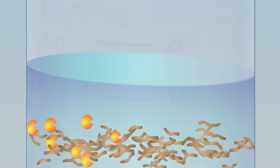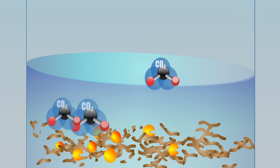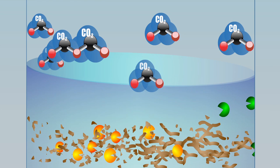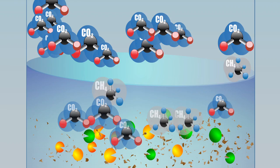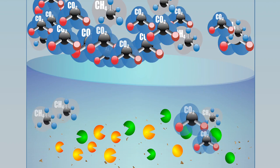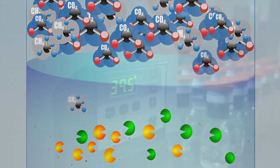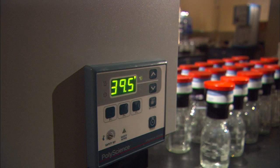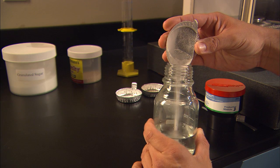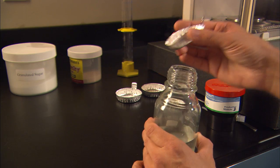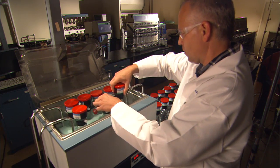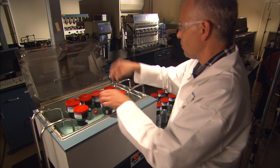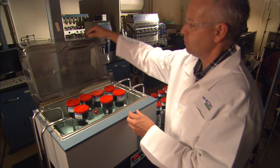As microbes metabolize the substrate, various gases are produced. The type of gases produced will depend on a number of factors, which include the makeup of the microbial population and the composition of the substrate. Because the system allows the user to control the environment, the fermentation substrate, the microbial population, and the study variables, researchers can use the RF system to monitor gases produced over time with little intervention.